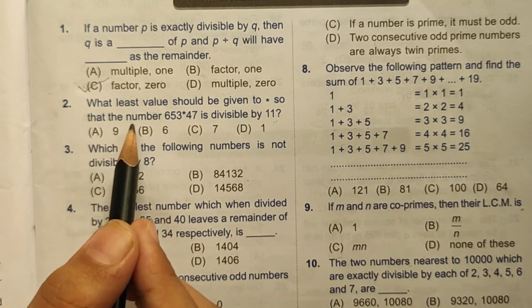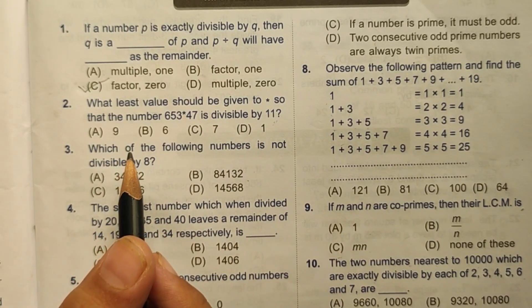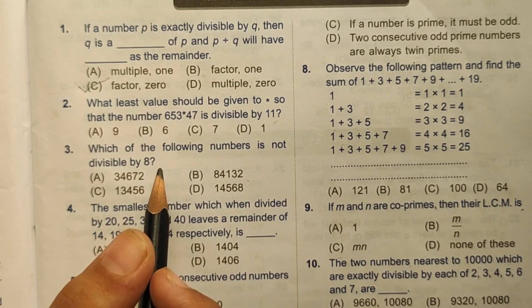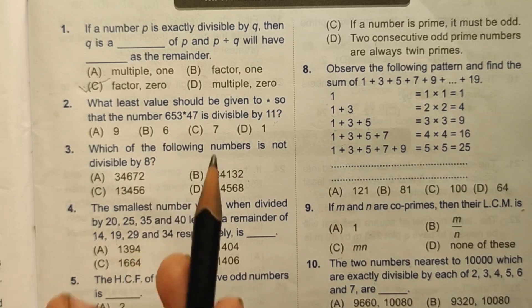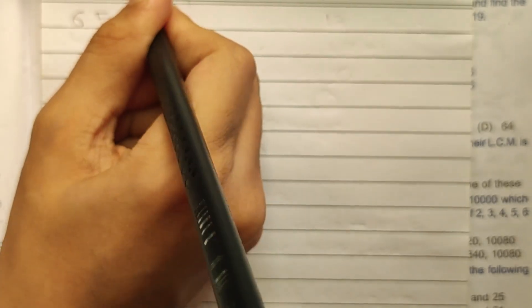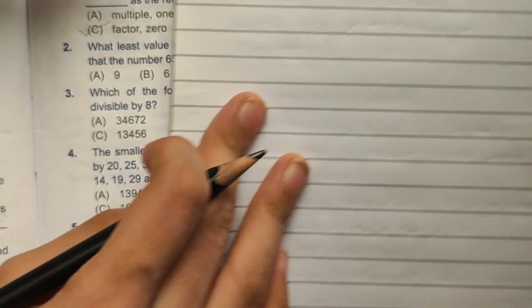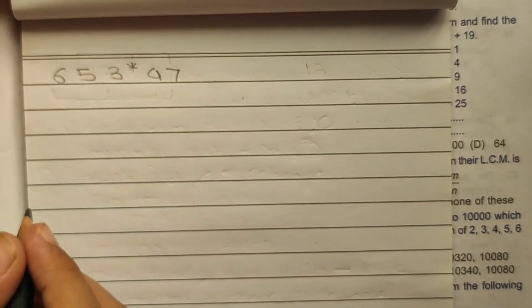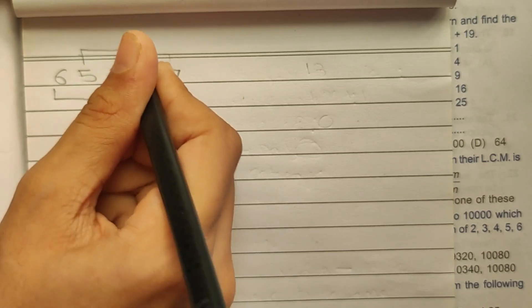Second question: what least value should be given to star so that the number 653★47 is divisible by 11? According to the divisibility rule of 11, the difference of the sum of the digits at odd positions and the sum of digits at even positions should be 0 or 11. We will first write the number 653★47 and group the digits.